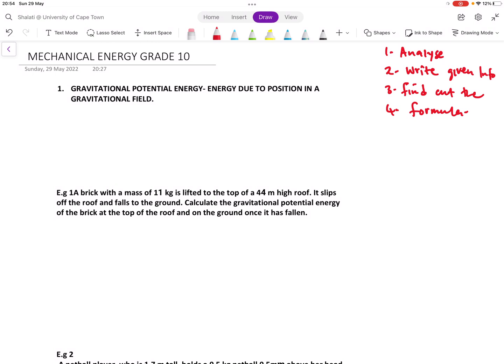For gravitational potential energy, we'll be using the formula Ep, standing for gravitational potential energy, equals to mgh. Some textbooks can actually denote it as PE. Here, m stands for our mass, which is usually measured in kilograms.